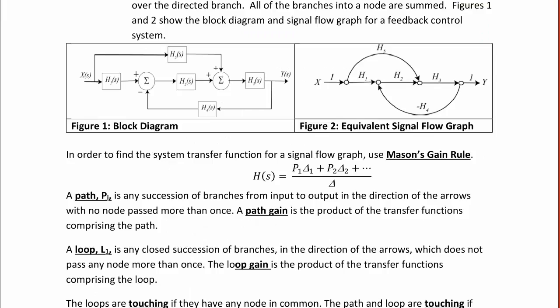Figures 1 and 2 below show the block diagram and signal flow graph for a feedback control system. So here in Figure 1, we have a block diagram that's very similar to what we saw in the last lecture, where we have the input x, the output y, and we have the transfer functions or transmittance.